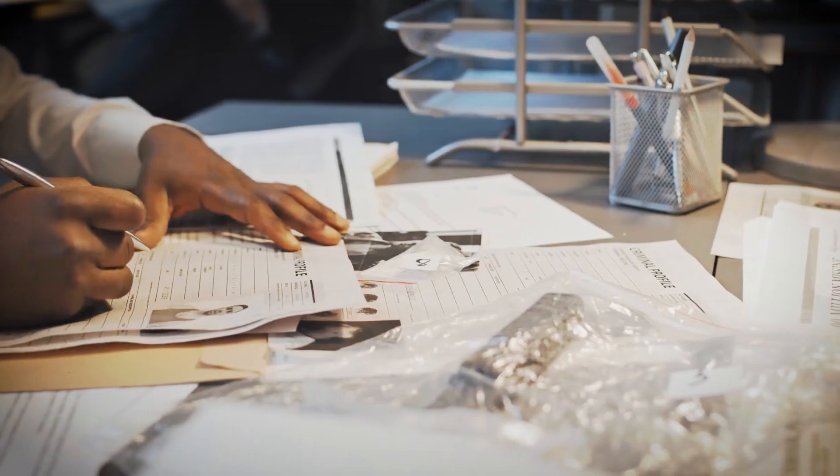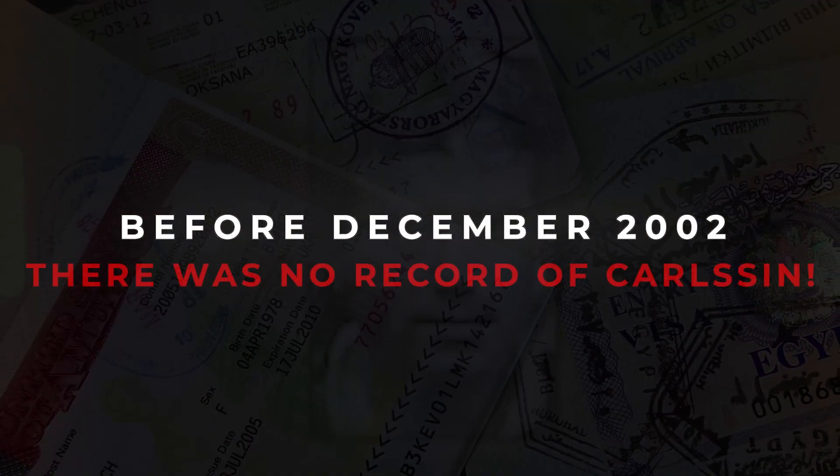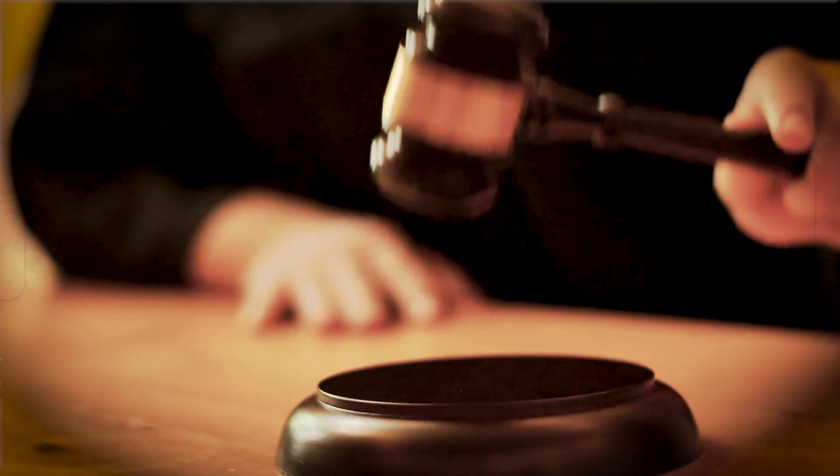When they investigated some more, they found that before December 2002, there was no record of Carlson. Even more surprising was that on 3rd April, Carlson had to appear in court for his bail hearing, but he had disappeared and was never found again.